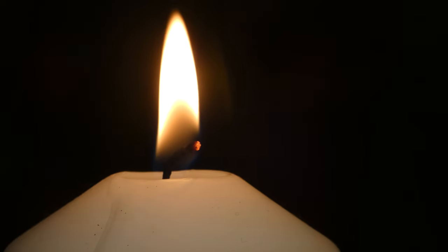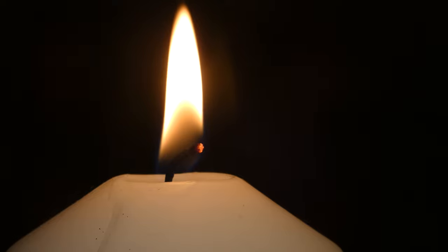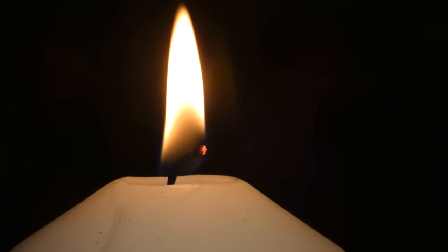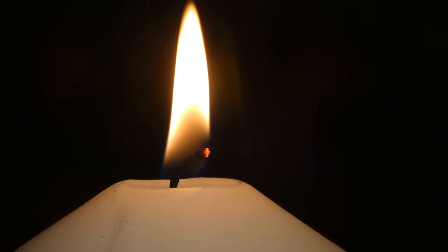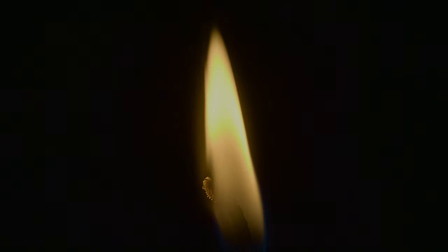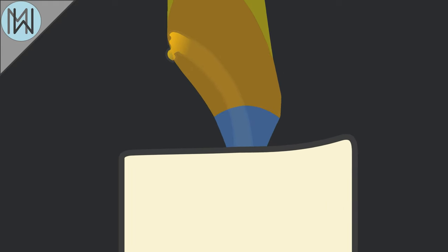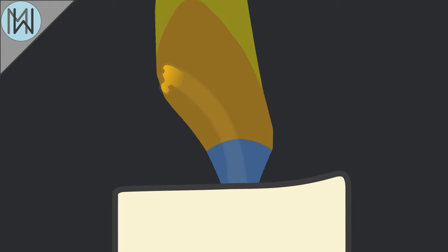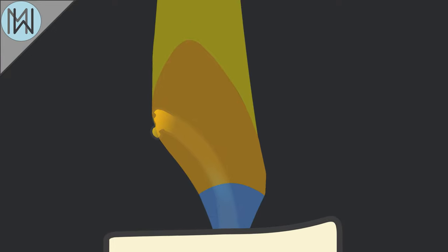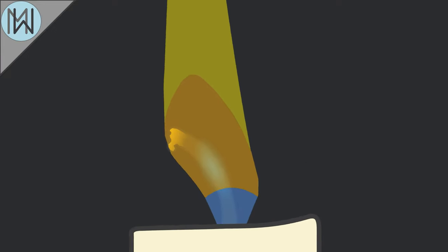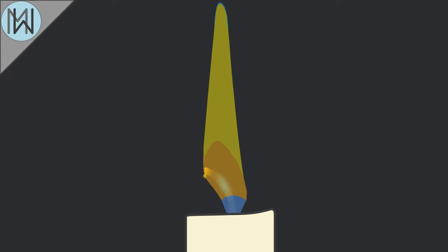The candle's wick is both the pathway for transporting the wax towards the flame and the means by which the wax is converted into a usable form. The wax is melted by the heat of the flame and drawn through the wick, where it vaporises, and it's this vaporised paraffin wax that fuels the candle's flame.